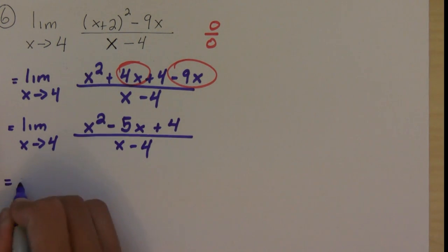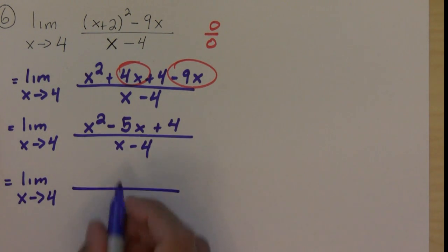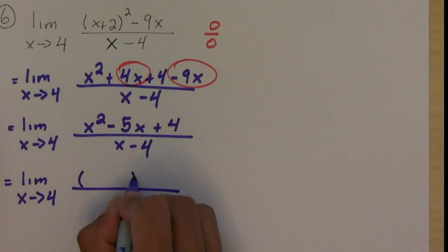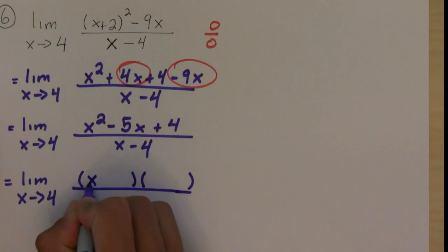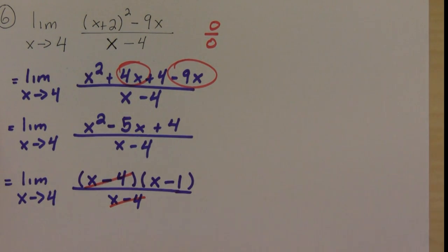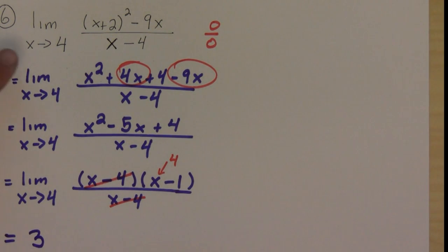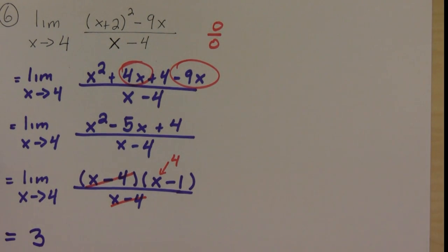We can factor x squared minus 5x plus 4 into x minus 4 and x minus 1. The x minus 4's cancel, and if I now plug in the value 4 I get 4 minus 1, which is 3. So the limit as x approaches 4 of the original function is 3.